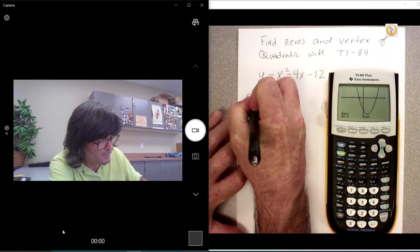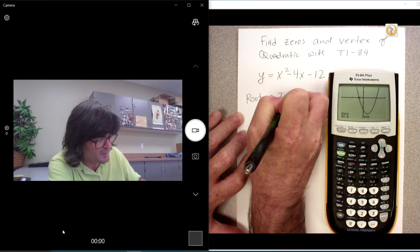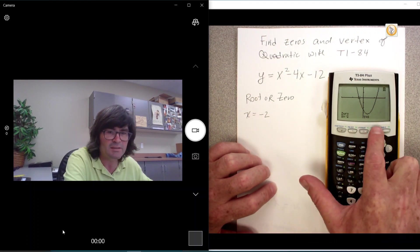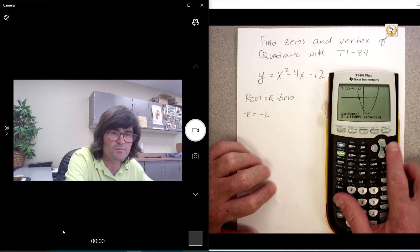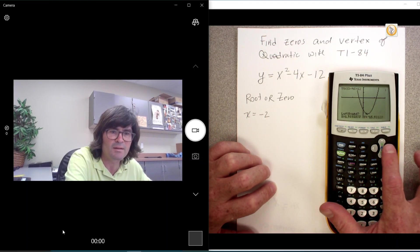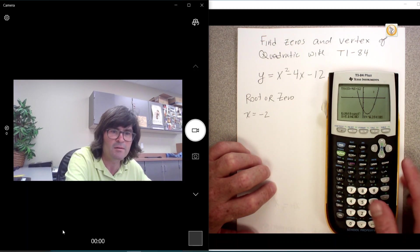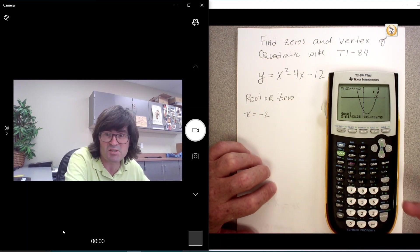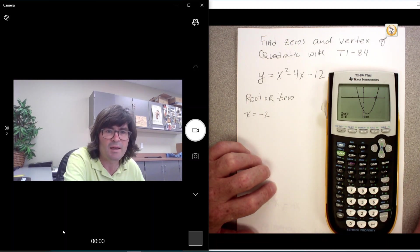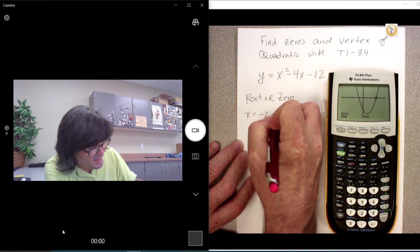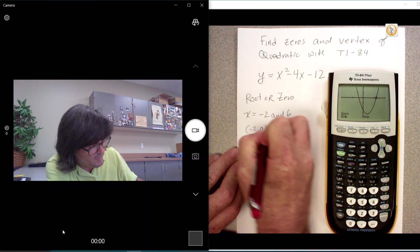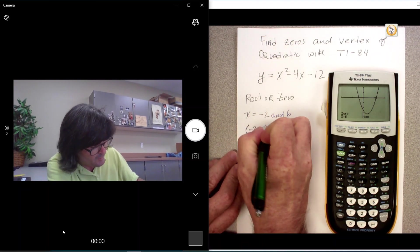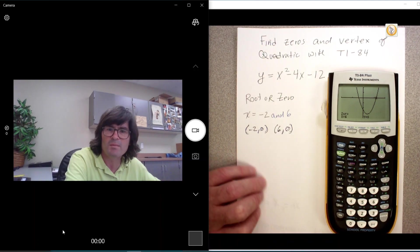I want to say root or zero. Those mean the same things. x equals negative two. Let's do this one. Second calc again. Find the zero. Go down here. Pick a point on the left. That looks pretty good to me. Enter. Pick a point on the right. Enter. We have those two little arrows again. It's going to search in and then we'll guess. So that looks good. And six. So x is negative two and six, or you could say negative two zero and six zero. So those are my two zeros.